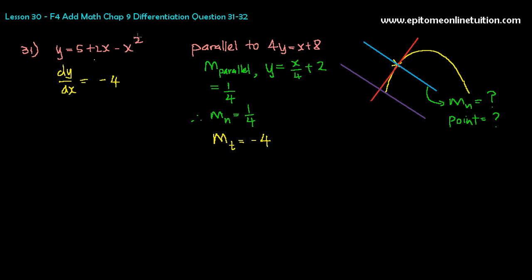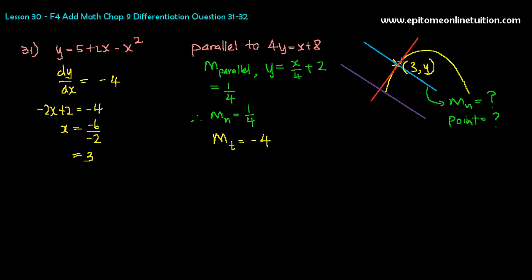So now, dy/dx of the curve — that is negative 2x plus 2 — is equal to negative 4. So the point where the tangent is at would be: negative 2x equals negative 4 minus 2, which is negative 6, over negative 2, so x is equal to 3. You have found the x-coordinate of this point. The dy/dx is negative 4, and therefore the point x would be 3.